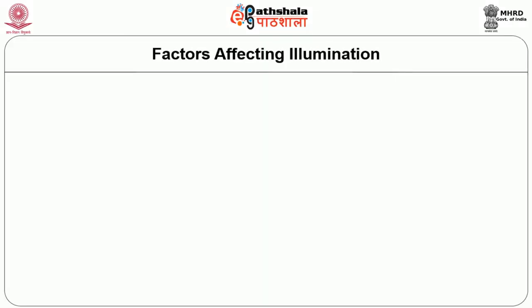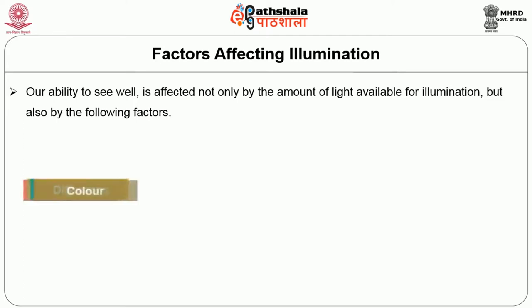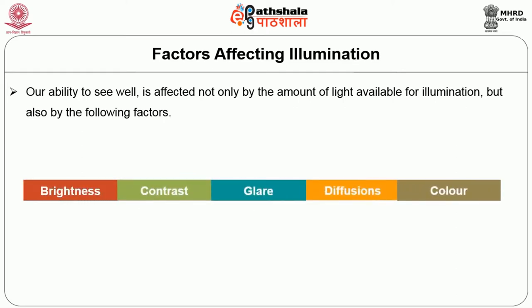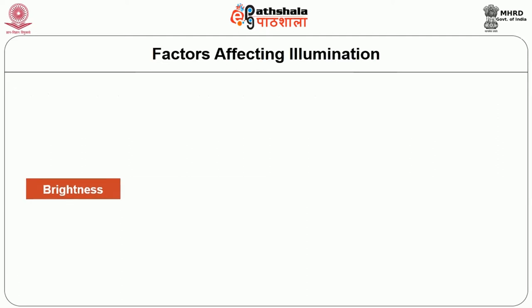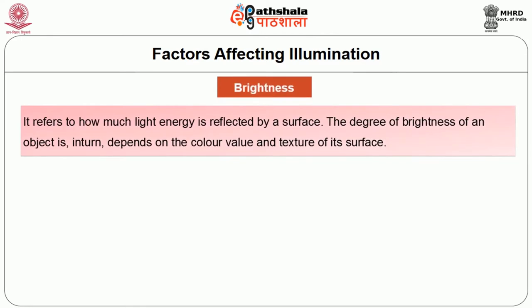Factors which affect illumination in a room: Our ability to see well is affected not only by the amount of light available, but also by brightness, contrast, glare, diffusion, and color. Brightness refers to how much light energy is reflected by a surface. The degree of brightness of an object depends in turn on the color value and the texture of its surface.